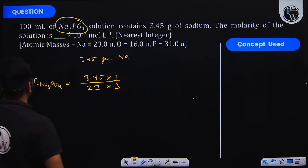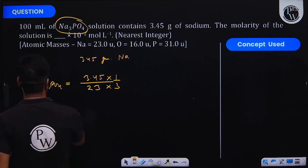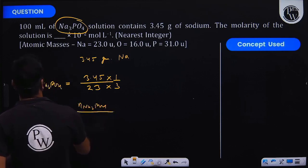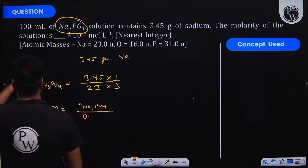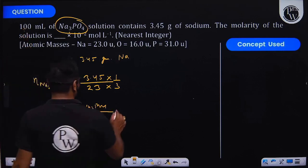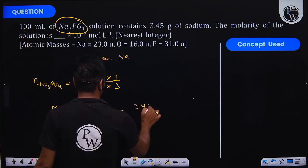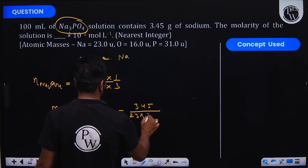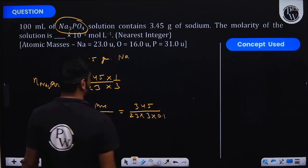Now you can find the molarity. Molarity would be equal to moles of Na₃PO₄ divided by volume of the solution in liters. In liters it would be equal to 0.1 liters. So you can say that molarity will be equal to this times this divided by 0.1.